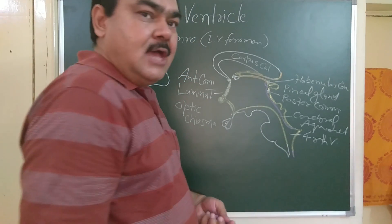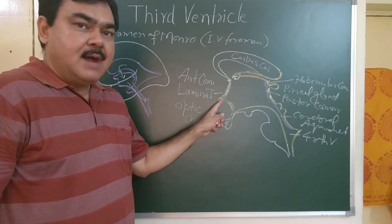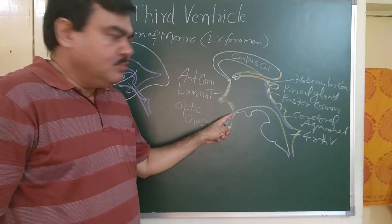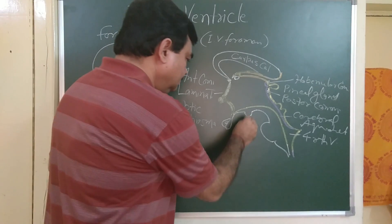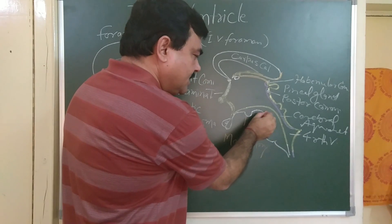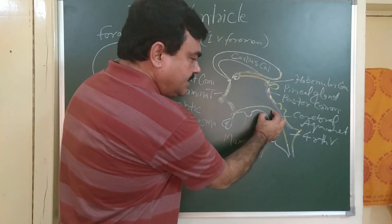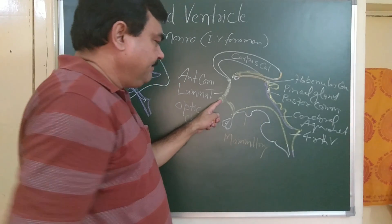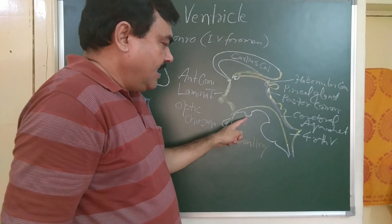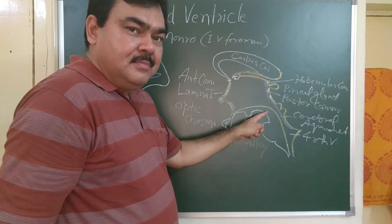The floor is formed by several structures from anterior to posterior: the optic chiasma, the tuber cinereum, the pituitary stalk or infundibulum, the mammillary body, and the tegmentum of the midbrain.